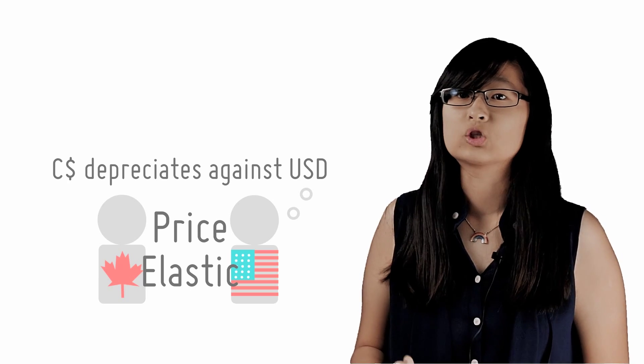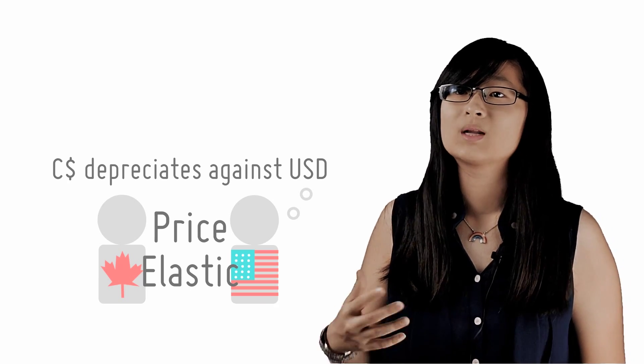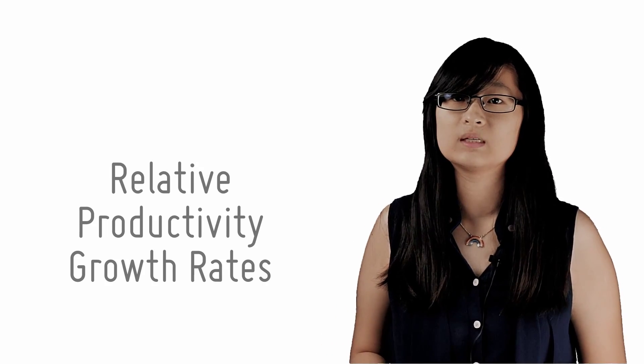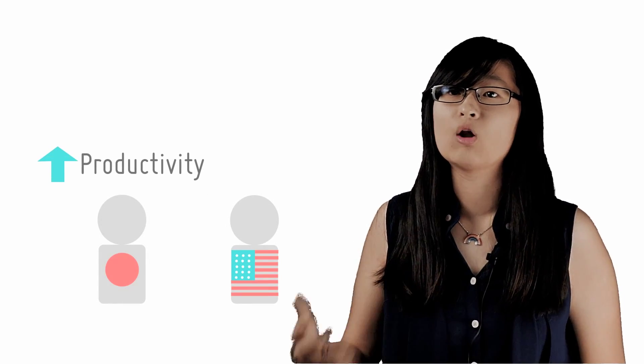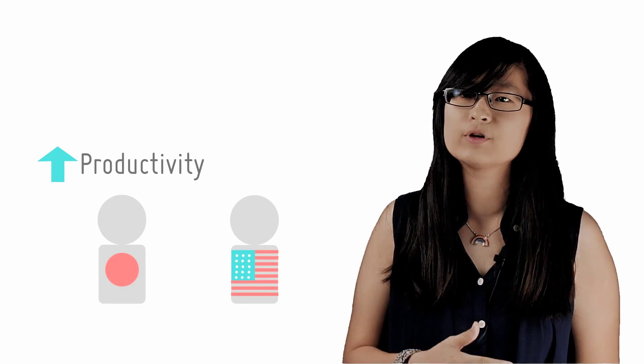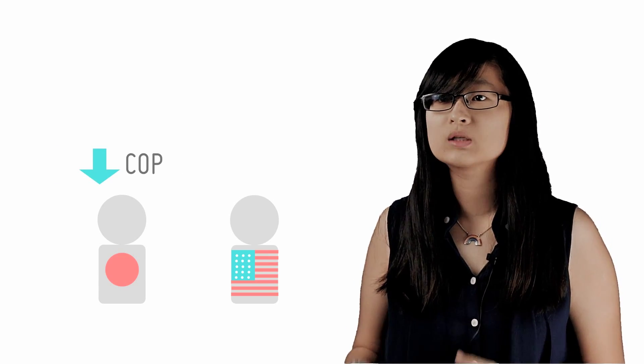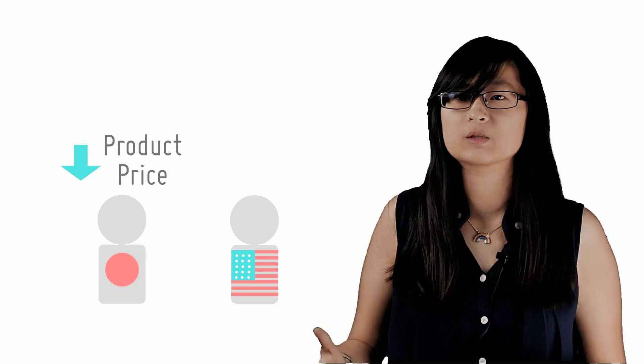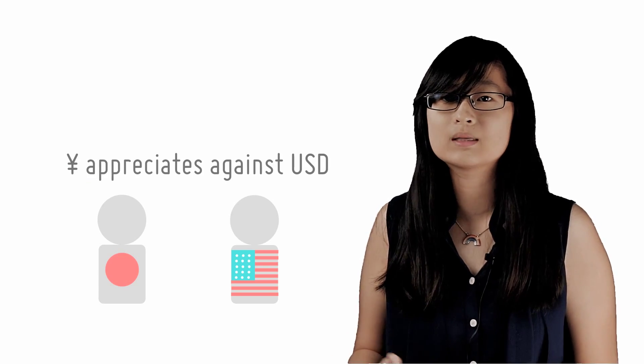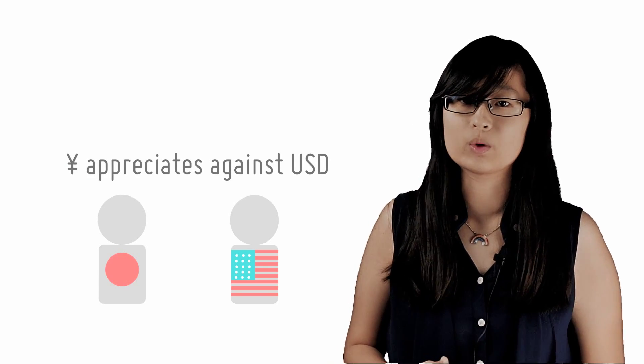Another factor that affects exchange rates in the long run is relative rates of productivity growth. Let's say Japan's productivity increases relative to the US in the long run. This means its average cost of production falls, causing the price of its products to fall. The rest of the explanation is basically the same as what we've already explained, and the result is that the yen appreciates against the US dollar.